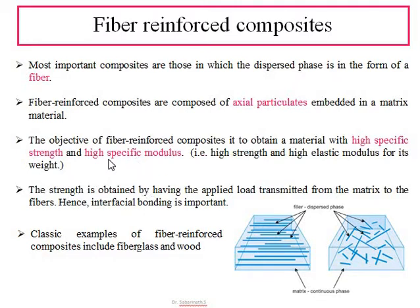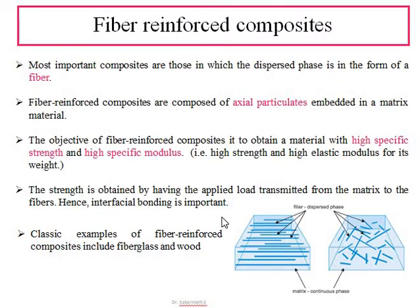This strength is obtained by having the applied load transmitted from the matrix to the fibers. Whenever a fiber is present, the matrix load is transferred to the fiber, and the fibers carry the load. One classic example of fiber reinforced composites is fiberglass, and another is wood.